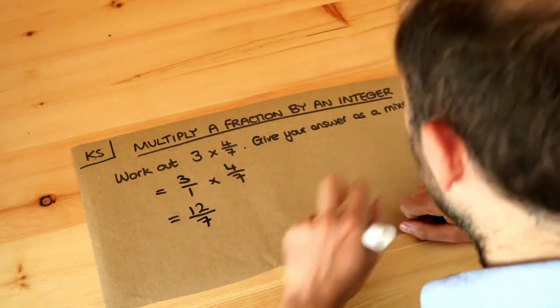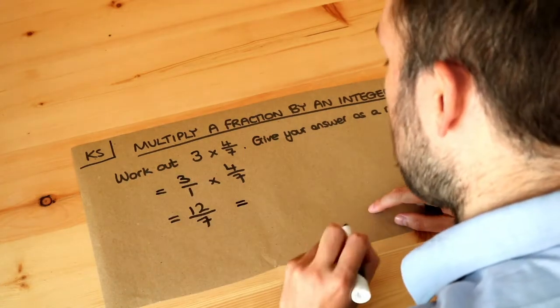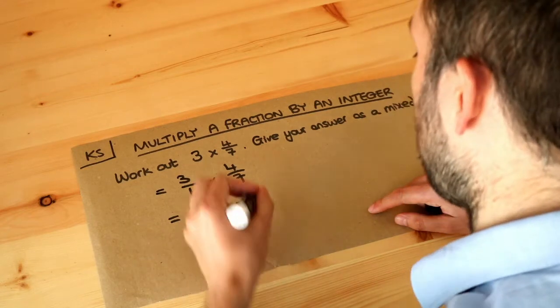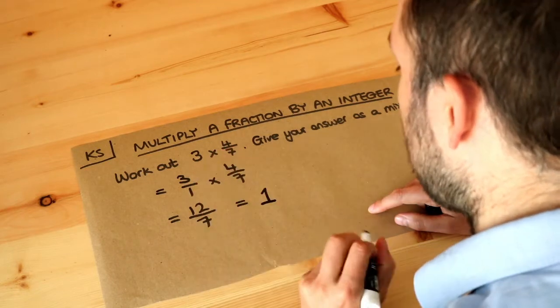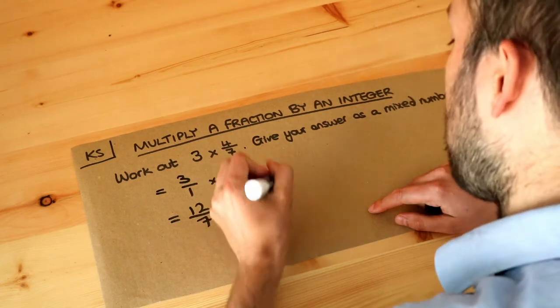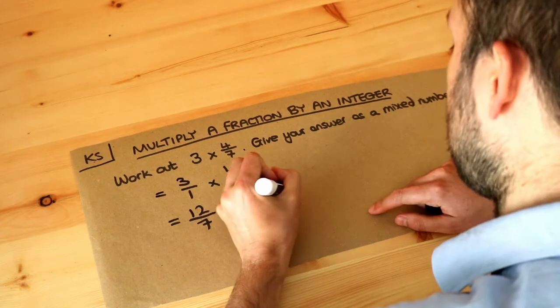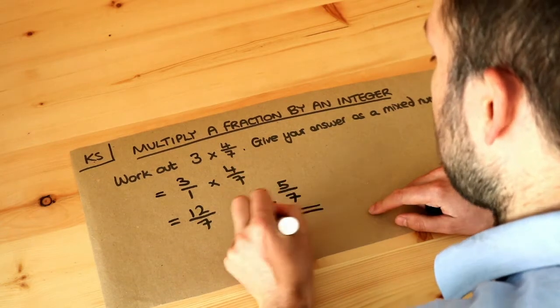Now it asks for our answer as a mixed number. So do you remember that we divide 12 by 7. How many times does 7 go into 12? It goes in once, so we put that as the whole bit. And then what's the remainder? It's 5. So we put the 5 as the numerator and we recycle that denominator here. And that is the final answer.